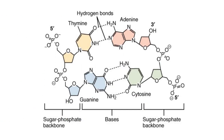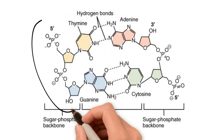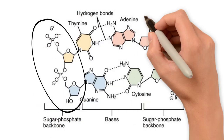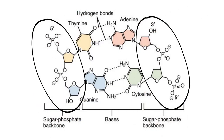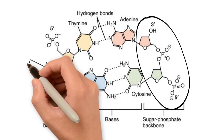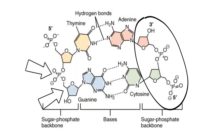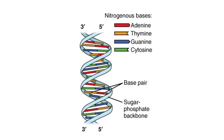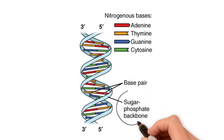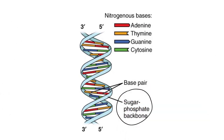The consecutive nucleotides of one strand are joined to one another by a chain of covalent bonds between the sugar of one nucleotide and the phosphate of the next. This results in what is called the sugar-phosphate backbone of the DNA molecule.